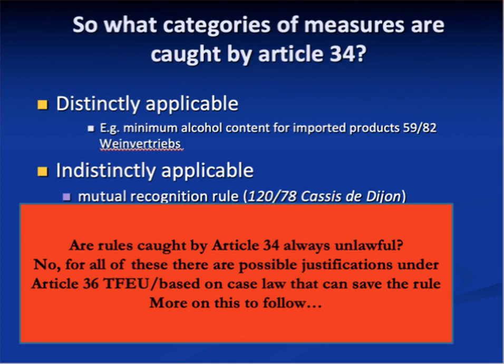In addition to this closed list of possible justifications in Article 36, there is also an open and extendable list that includes consumer protection, environmental protection and so on, in the case law of the European Court of Justice. You will want to make sure you have plenty of examples of that case law so you can tackle problem questions where a member state is trying to justify a national rule — the mandatory requirements part of Cassis de Dijon.